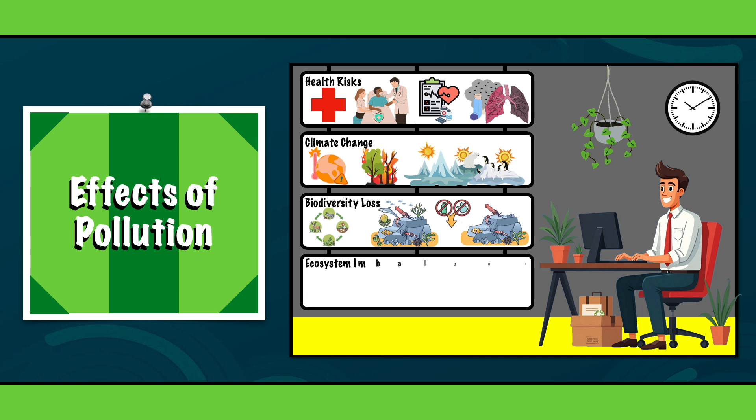And ecosystem imbalance. When one part of the ecosystem is disrupted, it has a ripple effect. The loss of pollinators like bees due to pesticide use, for example, harms food production.